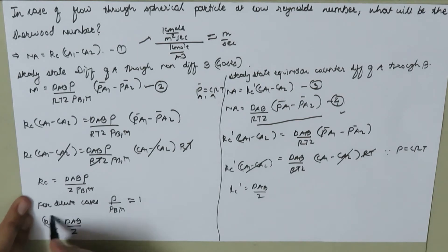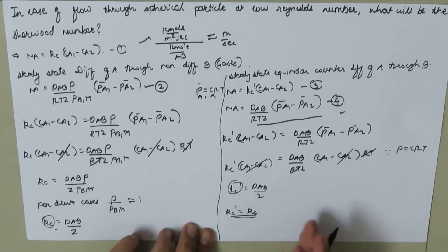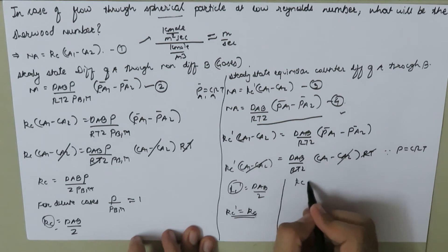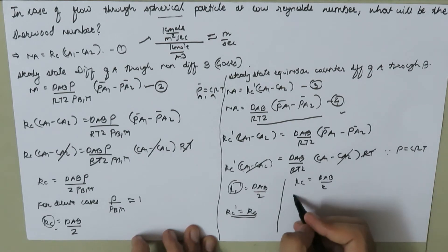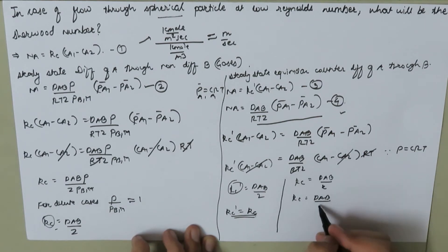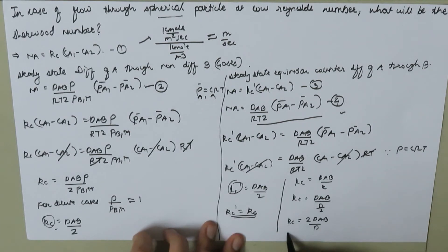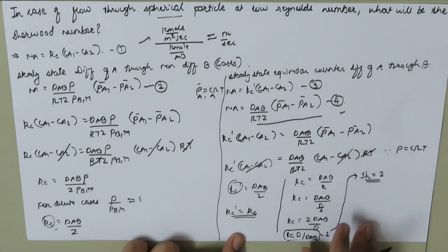From these two cases we know that Kc prime equals Kc. Now if we are dealing with a spherical particle, we can replace Z by the radius of the sphere R, so Kc equals DAB over R. Since radius is half of diameter, this becomes DAB over (d/2), so Kc equals 2·DAB over d. We can write this as Kc·d over DAB equals 2, and the left-hand side is the Sherwood number, so Sh equals 2.